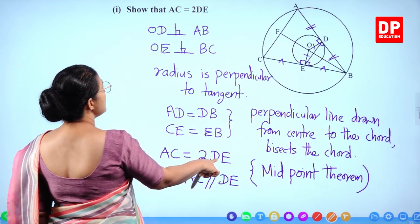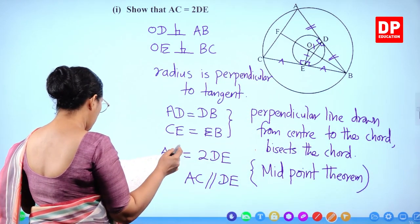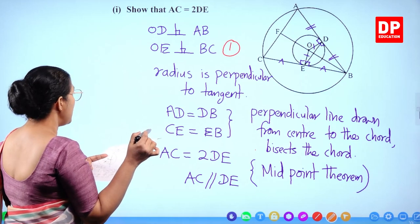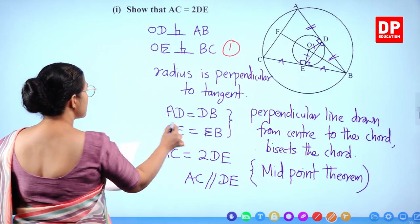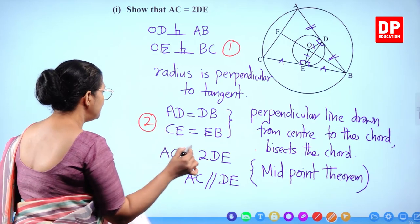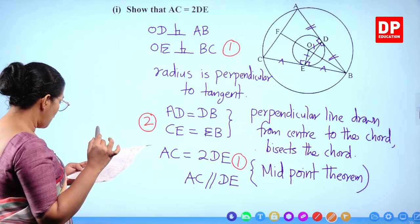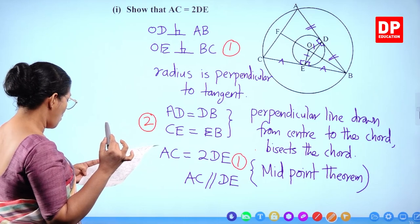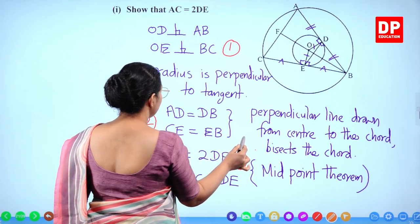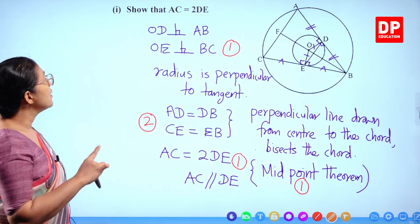For marks: 1 mark for identifying perpendicularity, 2 marks for identifying midpoints AD = DB and CE = EB, and 1 mark for applying the midpoint theorem to show AC = 2DE — 5 marks for Part 1.